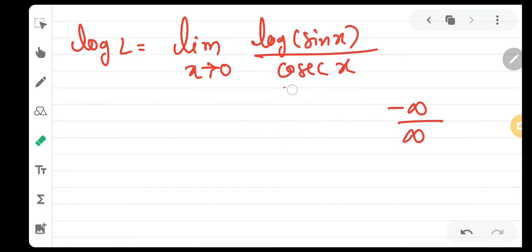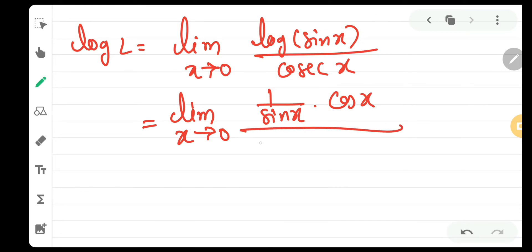And L'Hôpital's rule we already know. We derivate the numerator and then we derivate the denominator separately and then check our answer. So, limit x tends to 0. Log of sin x is 1 upon sin x dot cos x by chain rule. And derivative of cosec x is minus cosec x dot cot x.